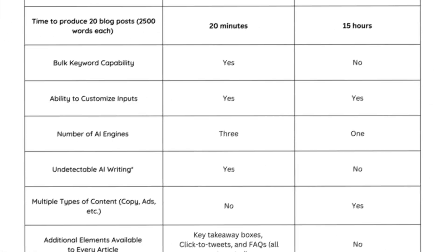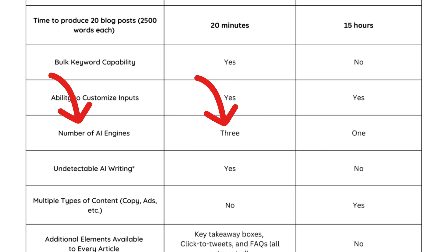Another thing to consider is the technology behind each platform. Content at Scale uses three AI engines plus two natural language and semantic algorithms, whereas Jasper only uses one. The reason this is so important is the quality of the output. Content at Scale is purpose-built for SEO-optimized articles, meaning that for blogging and article writing, Content at Scale is going to provide way better results than Jasper.